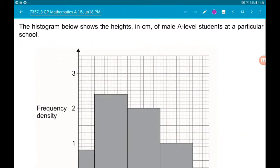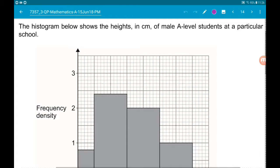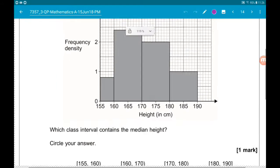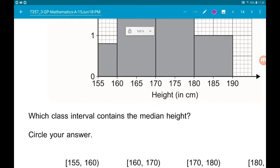Okay, question 12. So the histogram shows the heights in centimeters of male A-level students at a particular school. We were asked which class interval contains the median.